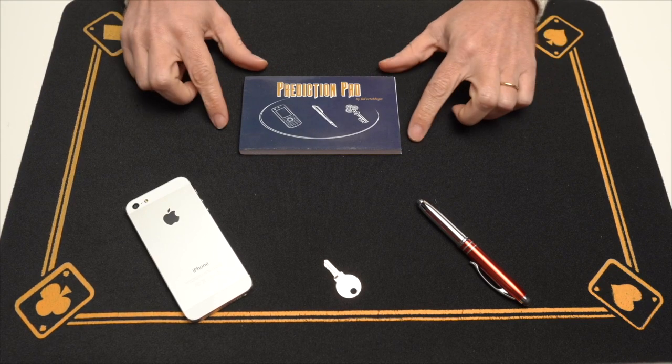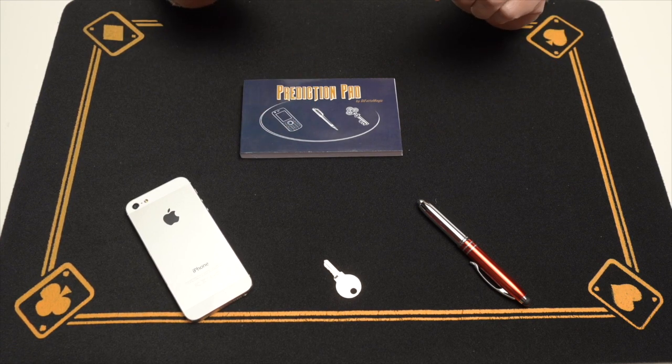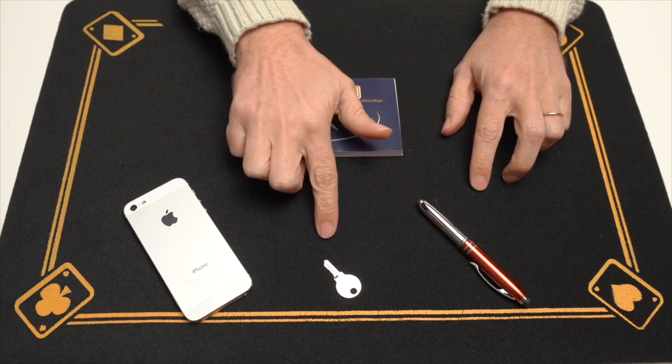Hi Stefano. Hi. Here I have a little pad and inside this pad there is a prediction. I also have three objects: a telephone, a key, and a pen.